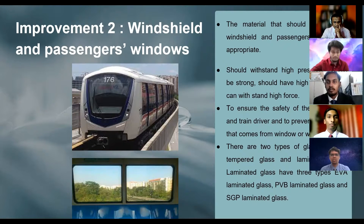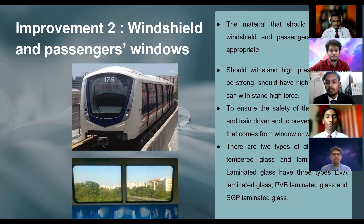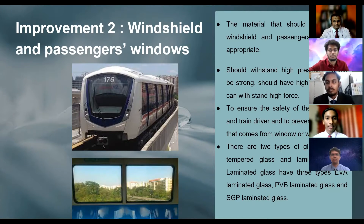The next improvement that will be made is for the windshield and the passengers' windows. The material used for the windshield and passengers' windows should be appropriate as it should withstand high pressure and high force, and it should have high strength. This is to ensure the safety of the passengers. There are some types of glass such as laminated glass and also tempered glass.